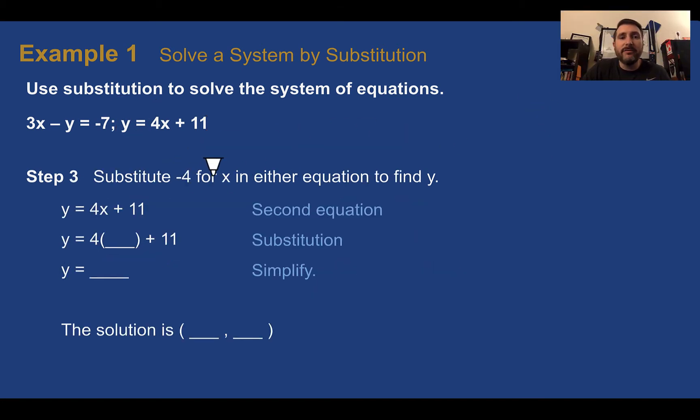Now that I know that x is negative 4, I'm going to take that negative 4 value and plug it in for x. Here they chose the second equation because it's easier to solve for y since y is already by itself. Whatever you get, that's what y equals. We could do the other one as well. However, we would have to do a little more manipulating. So plugging in negative 4, 4 times negative 4 is negative 16 plus 11 is negative 5. So my final solution, negative 4 was x, negative 5 was y. My solution is the coordinate negative 4, negative 5.